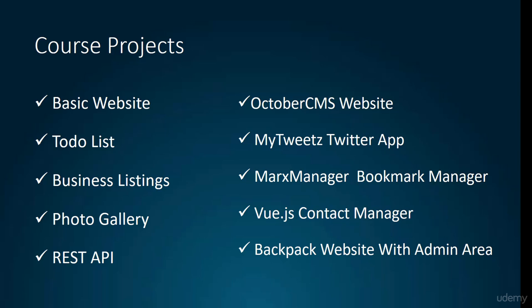Then we'll be building an application called My Tweets, which will integrate with the Twitter API. We'll be able to post tweets in our application as well as compose them. Then we're going to build Marks Manager, which is a bookmark manager, and we're going to switch it up and use Postgres for our database — we've been using MySQL up until this project. And then we're going to build a contact manager and we're going to use Vue.js on the front end, which is actually included with Laravel 5.4, so we're going to take advantage of that and build a Vue.js component to work with our contacts on the back end.